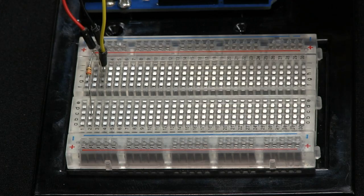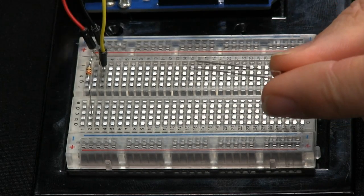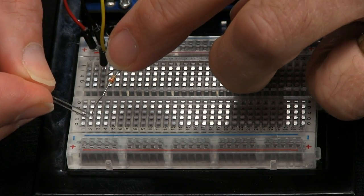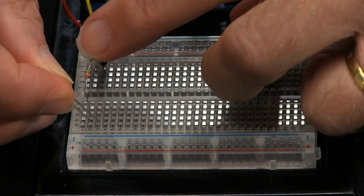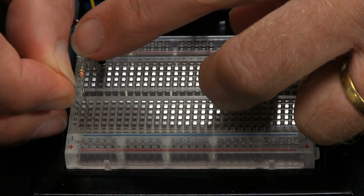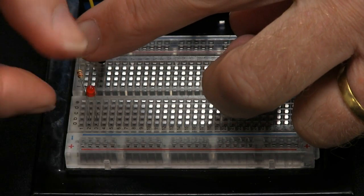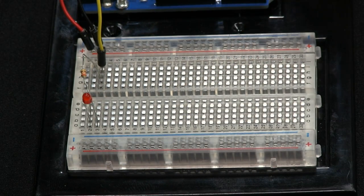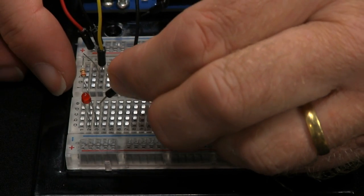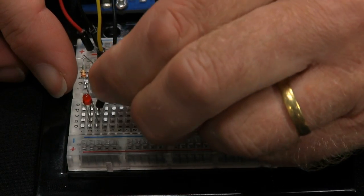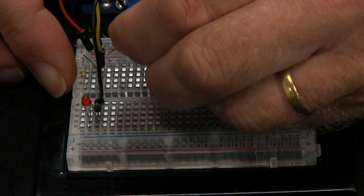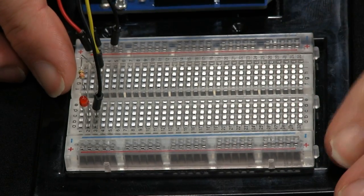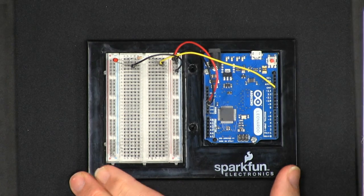Now this is going to be the positive end so we need the positive end of the LED which is the longer of the two leads. So into that row we connect the positive, and into whichever row we like which we'll say is just the row next to it we plug in the negative. And then we will take another lead and connect that negative pin up to the negative on the power distribution bus. So the LED is now connected.